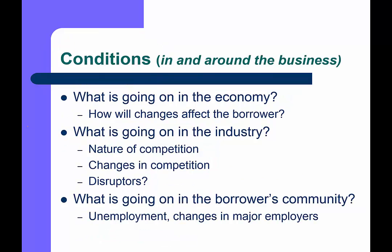The second C is conditions — economic conditions. Are we in a boom or a recession, and how do those changes affect the borrower? Drilling down: what's going on in the industry? What's the nature of competition? Are there disruptors? For example, lending to cab companies for 50 years and then Uber and Lyft fundamentally change that business. We also look at the specific local community — maybe the economy is booming nationally, but a major local employer has left, affecting unemployment.